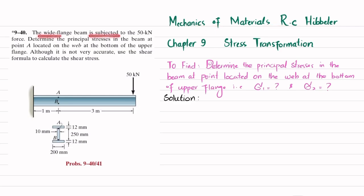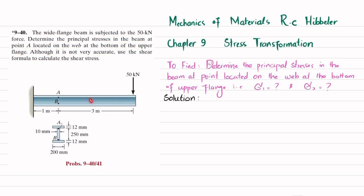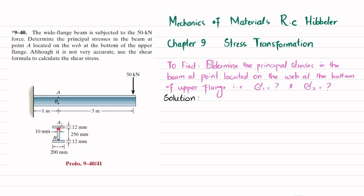The problem statement: a wide flange beam is subjected to a 50 kN force. Determine the principal stress in the beam at point A, located on the web at the bottom of the upper flange. Although it is not very accurate, use the shear formula to calculate the shear stress. This is a cantilever beam with an I-beam cross section — the two horizontal parts are flanges and the vertical part is the web. Point A is at the bottom of the upper flange.